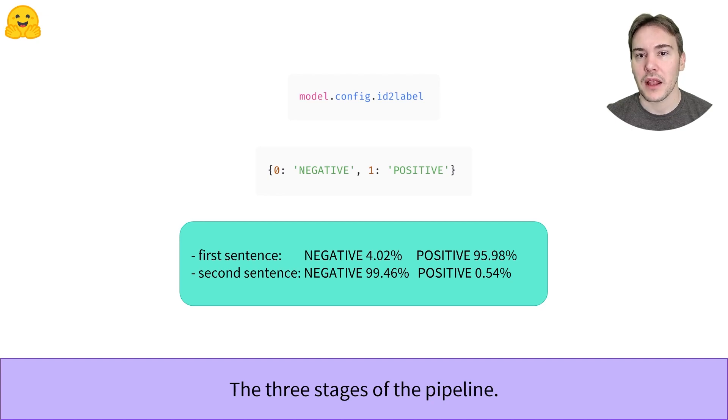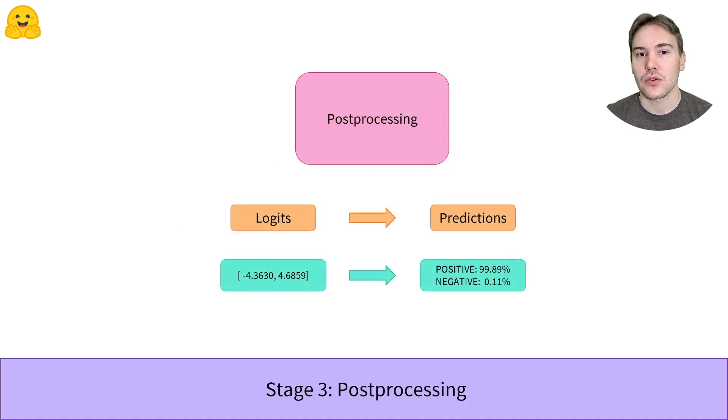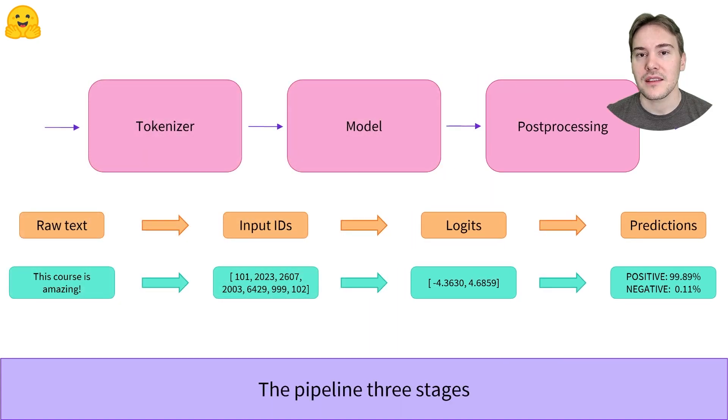This is how our classifier built with the pipeline function picked those labels and computed those scores. Now that you know how each step works, you can easily tweak them to your needs.